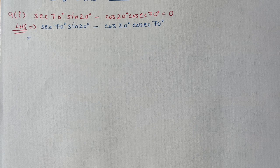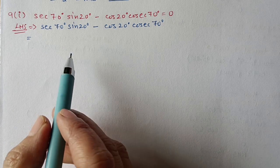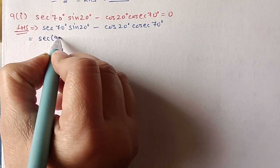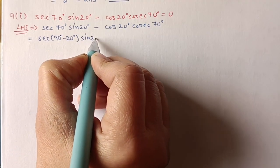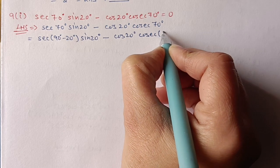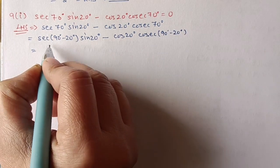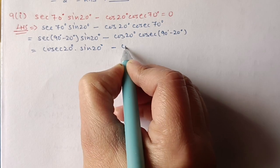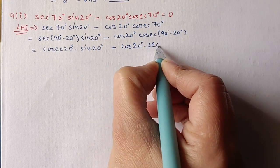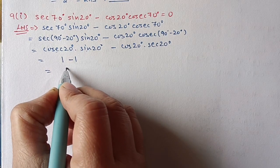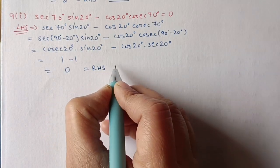Question 9, first part: prove sec70·sin20 − cos20·cosec70 = 0. sec70 = sec(90−20), sin20 as it is, cos20 as it is, cosec70 = cosec(90−20). This becomes cosec20·sin20 − cos20·sec20. sin and cosec multiply to 1; cos and sec multiply to 1. So 1 − 1 = 0, equal to right side. Hence proved.